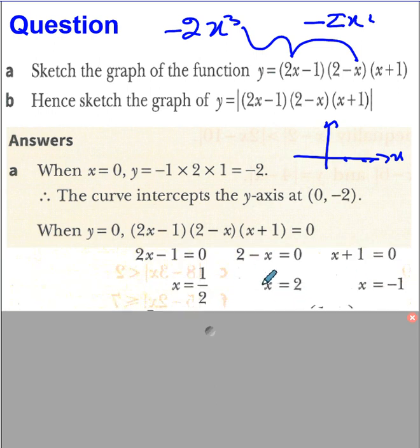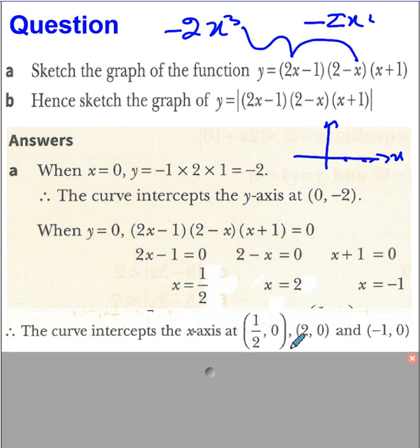So from here you will have point (½, 0), (2, 0), (-1, 0).